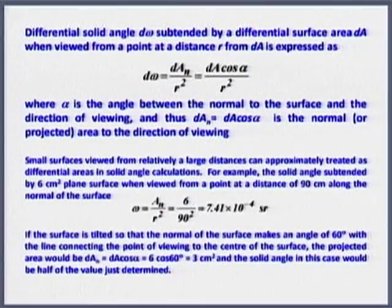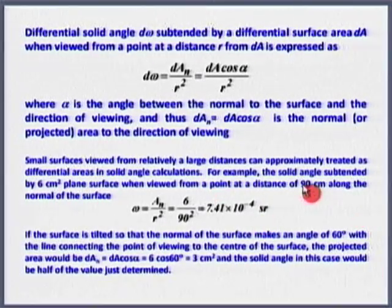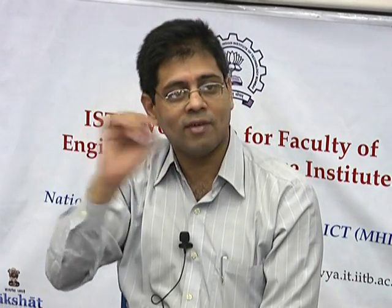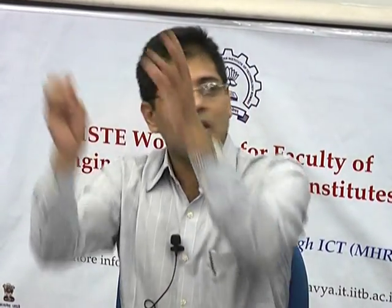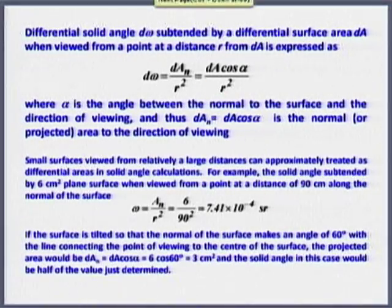Small surfaces when viewed from a relatively large distance can be approximately treated as differential area in solid angle calculation. For example, the solid angle subtended by a 6 cm² plane when viewed from a point at a distance of 90 cm normal to the surface is essentially a point. That is why in convection and conduction calculations — even with radiation — where a ball is cooling to the environment, the room is so large compared to the ball that you do not have to worry about solid angles or directions.